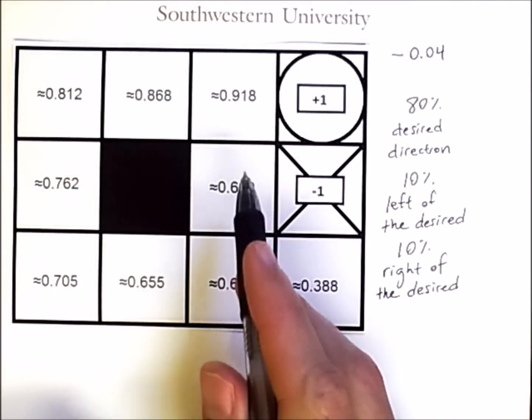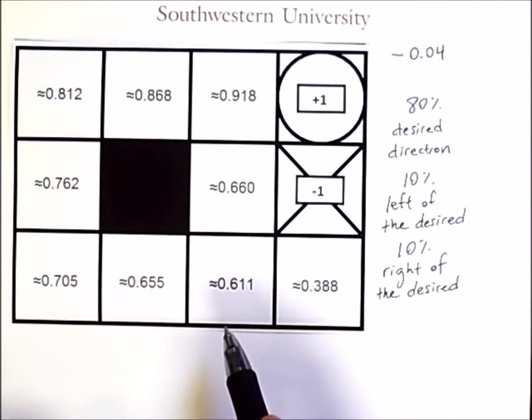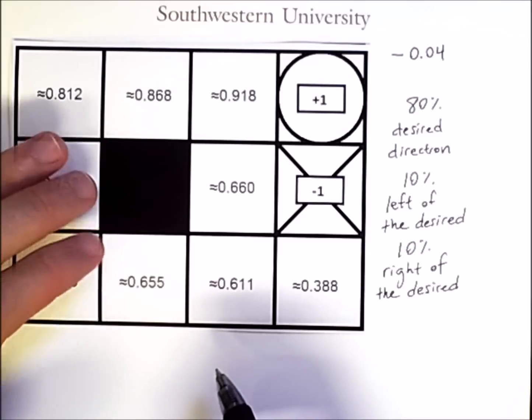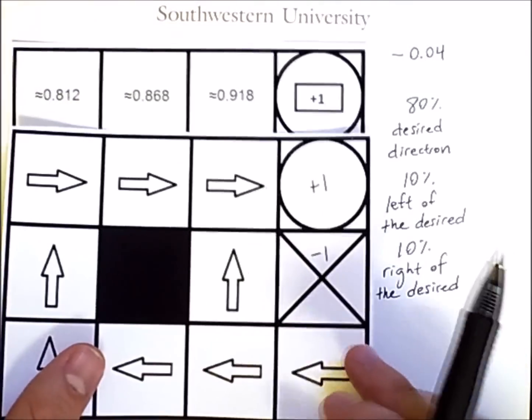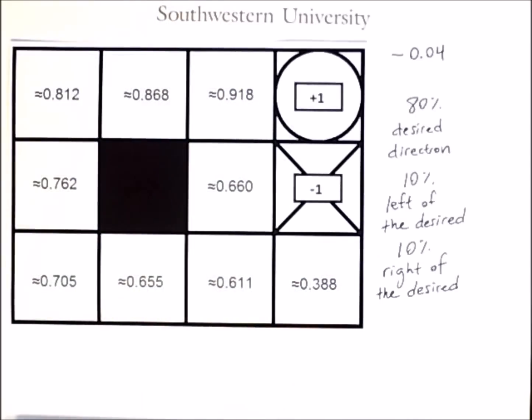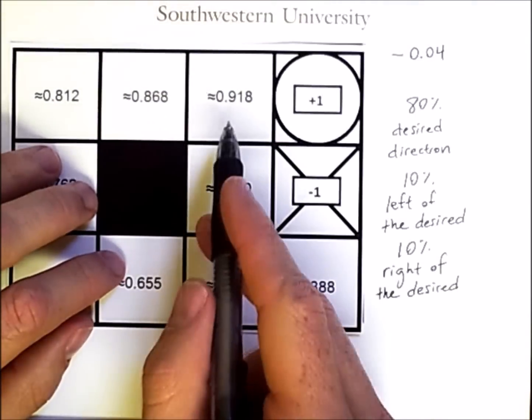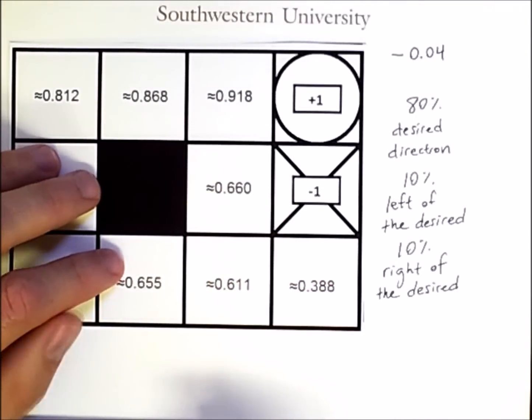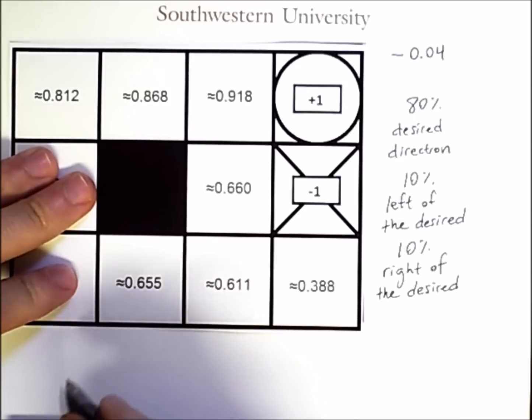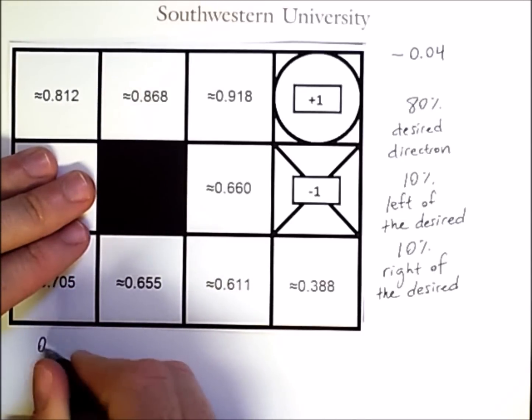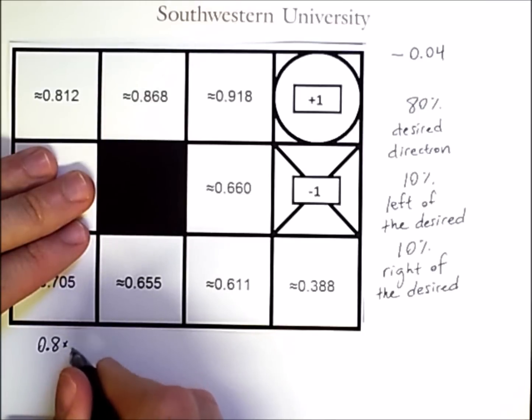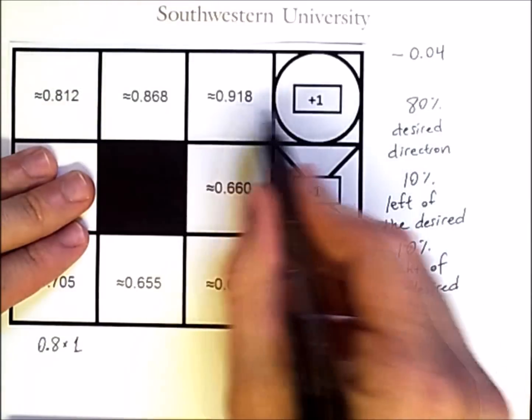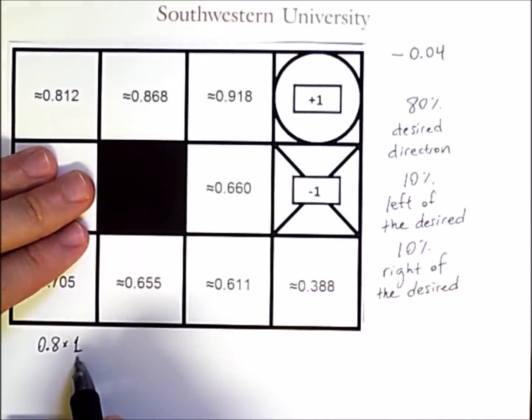We can verify these values with our knowledge of how to calculate expected values. For example, in this state, the optimal action is to move to the right. So the reason that this is the expected value is that there is an 80% chance of getting a reward of 1 in the next state, because if I move to the right, I'll get up in this state and that's the reward from it.